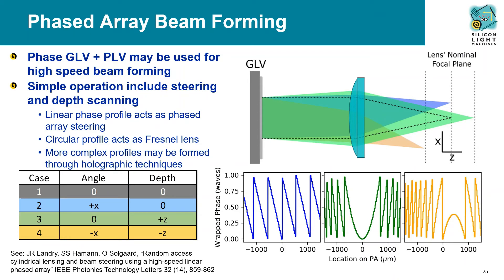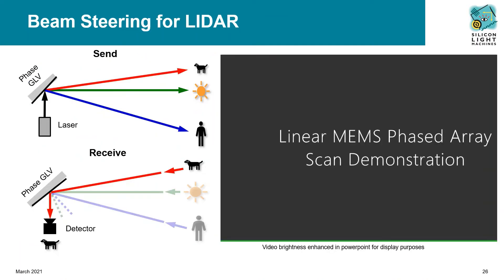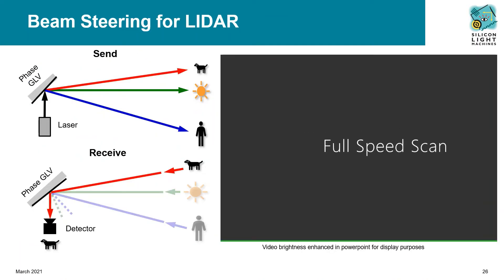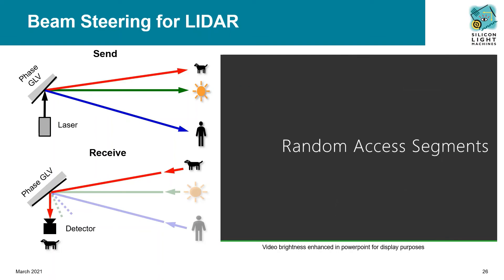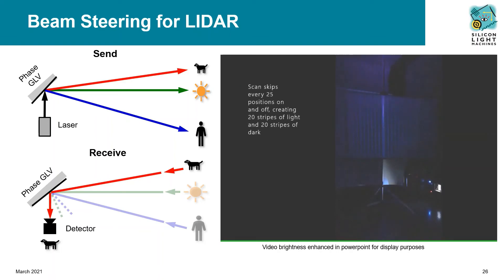Phase control allows for holographic beamforming. Phased array-like operation has been demonstrated by researchers at Stanford University in collaboration with Silicon Light Machines. A linear profile may steer a beam's location in the far field or focal plane, while a circular or spherical profile imparts a lens power. These techniques can be used simultaneously for high-speed random axis lateral and depth scanning. In this video on the right, we showcase the scanning capabilities of the phased GLV. A full-speed scan fills the screen — too fast to distinguish the scan line, though you can see optical surface reflections. The random axis scan enables any scan pattern focusing on areas of interest.